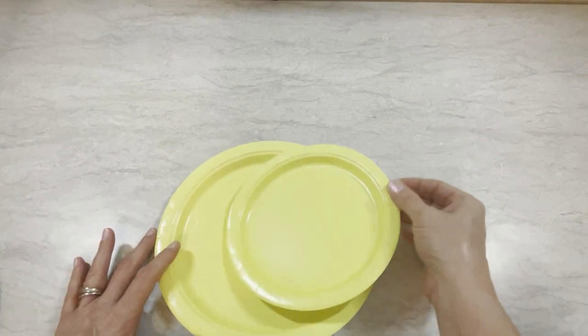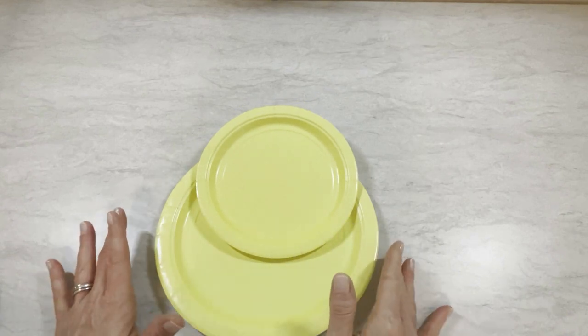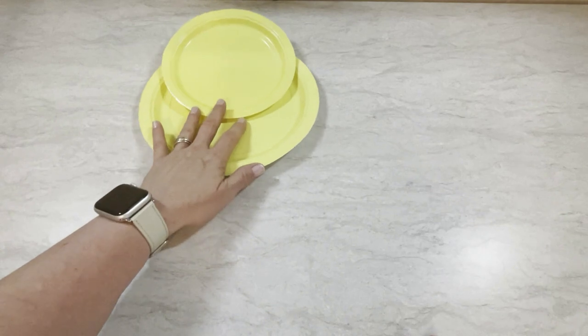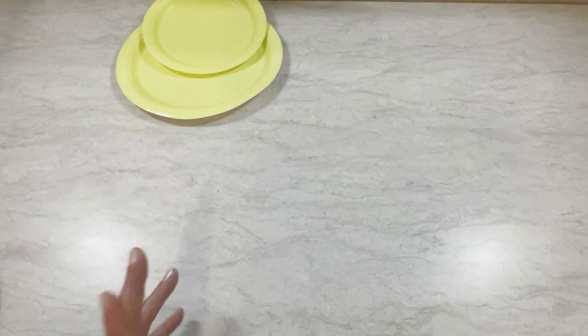We're using yellow plates and these are the light yellow that I got from Dollar Tree. You can use any yellow paper plates that you want. I'm going to set those aside for now because I've got some other things I need to do first.